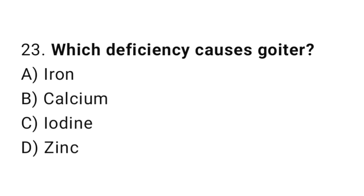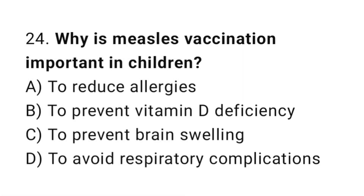Question number twenty-three: which deficiency causes goiter? The correct answer is C, iodine. Question number twenty-four: why is measles vaccination important in children? The correct answer is D, to avoid respiratory complications.